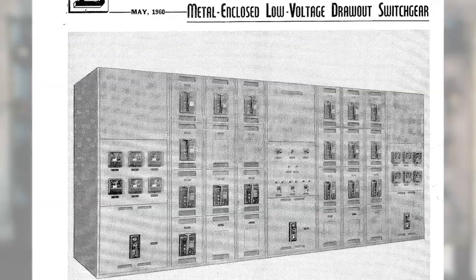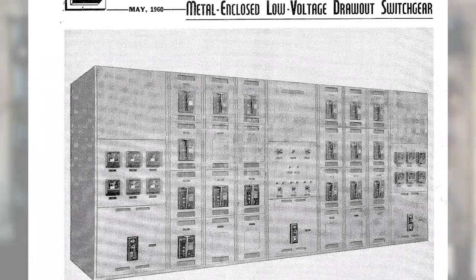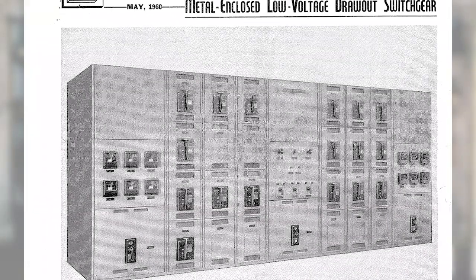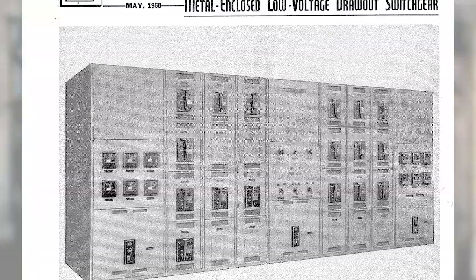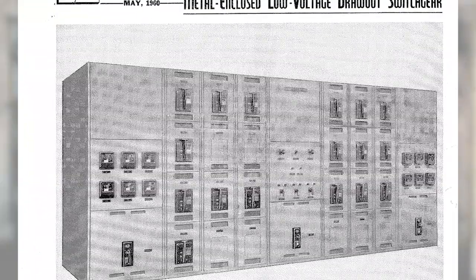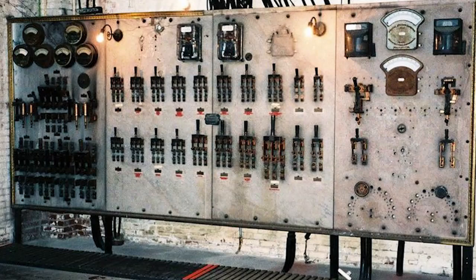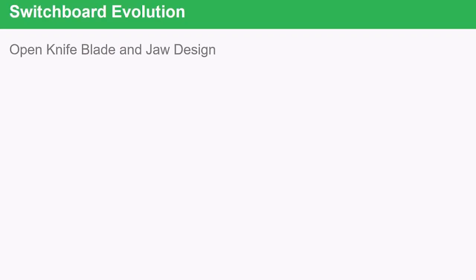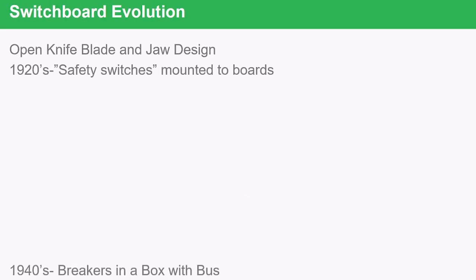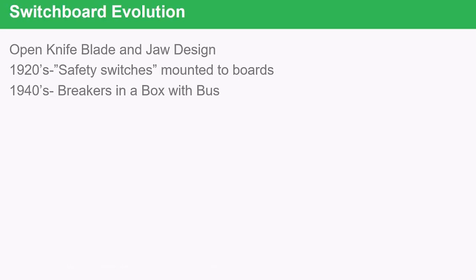From that point, circuit breakers began to develop. This is a picture of a 1960s piece of switch gear, where all of these switches and fuses have been replaced by circuit breakers. So if you look at the history and the evolution, it goes from open knife blades and jaws mounted to a board, to safety switches mounted on a board, to circuit breakers in a box where the breakers are all bused together.